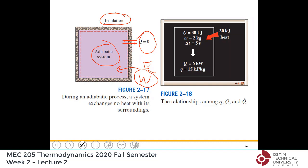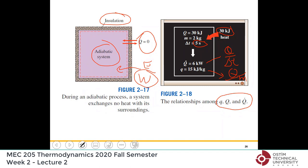Numerical example relating Q, q, and Q-dot: a 2 kg system receives 30 kJ of heat over 5 seconds. Heat transfer rate Q-dot = Q / Δt = 30 / 5 = 6 kJ/s = 6 kW. Heat transfer per unit mass q = Q / m = 30 / 2 = 15 kJ/kg.